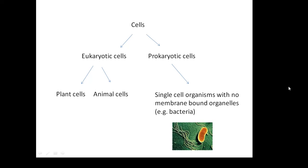Prokaryotic cells are single-cell organisms with no membrane-bound organelles — for example, bacteria. Think of them as bacteria. A very simple definition is that prokaryotic cells don't have a nucleus, whereas eukaryotic cells do.